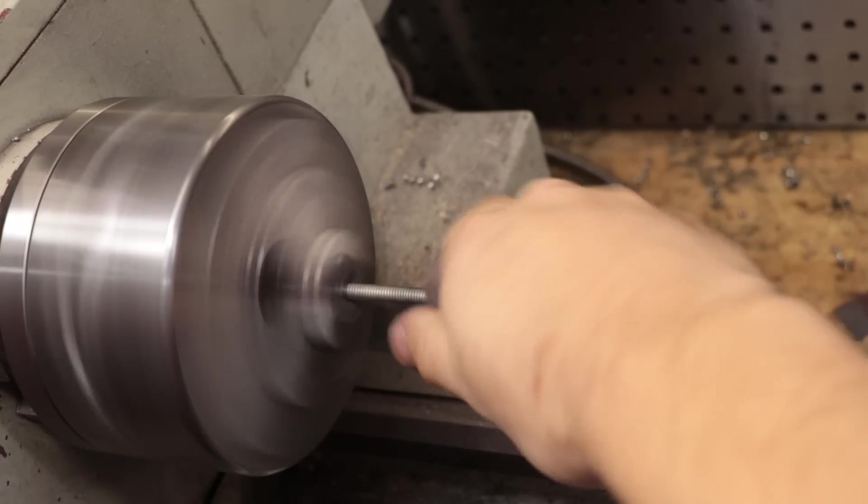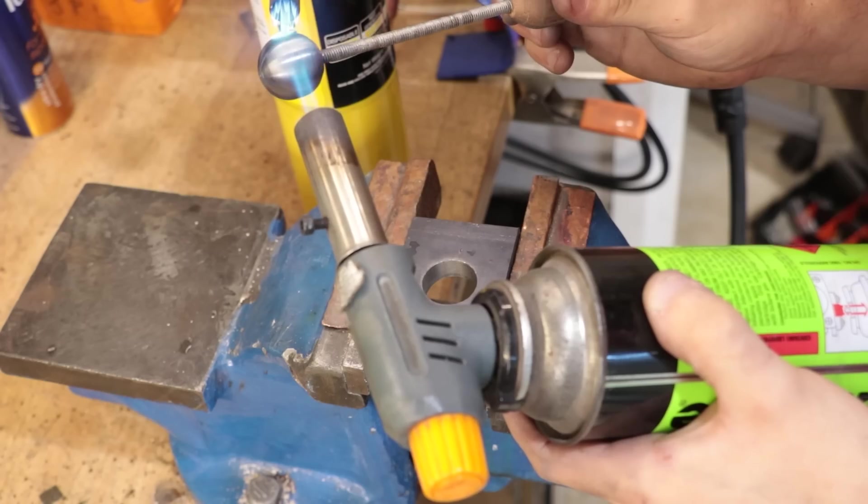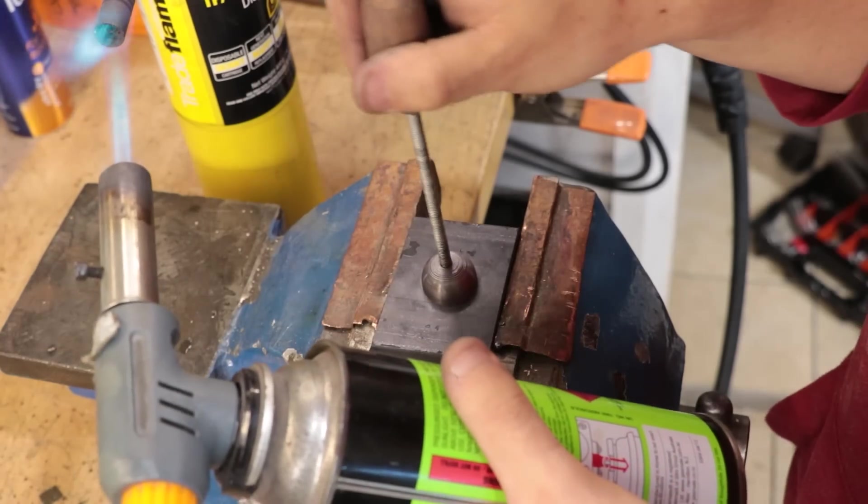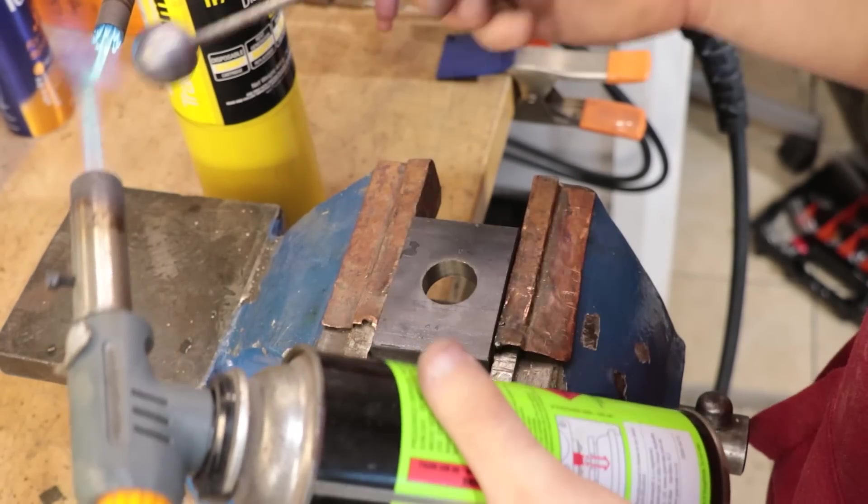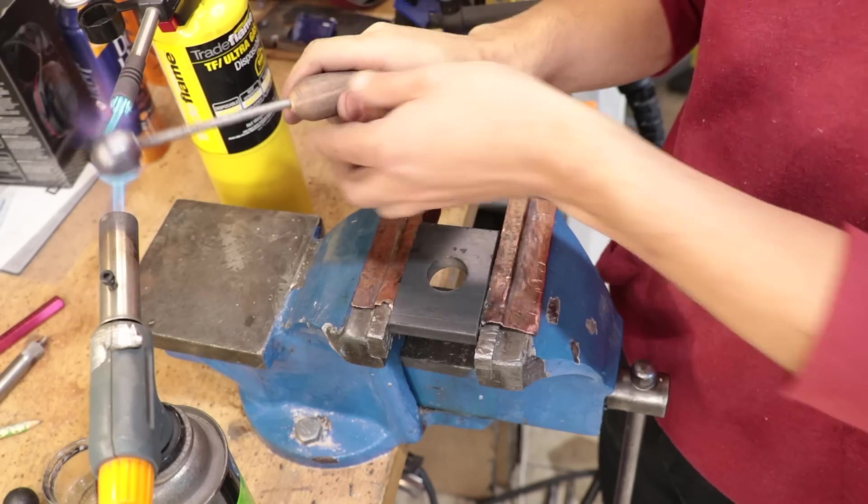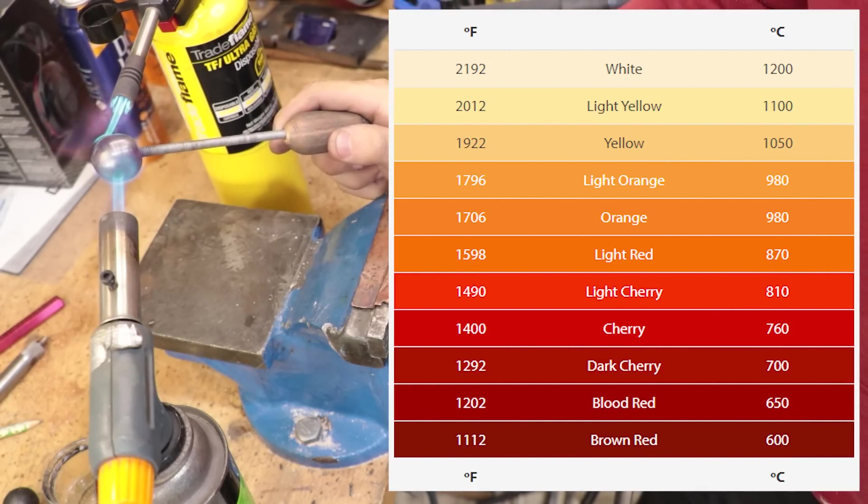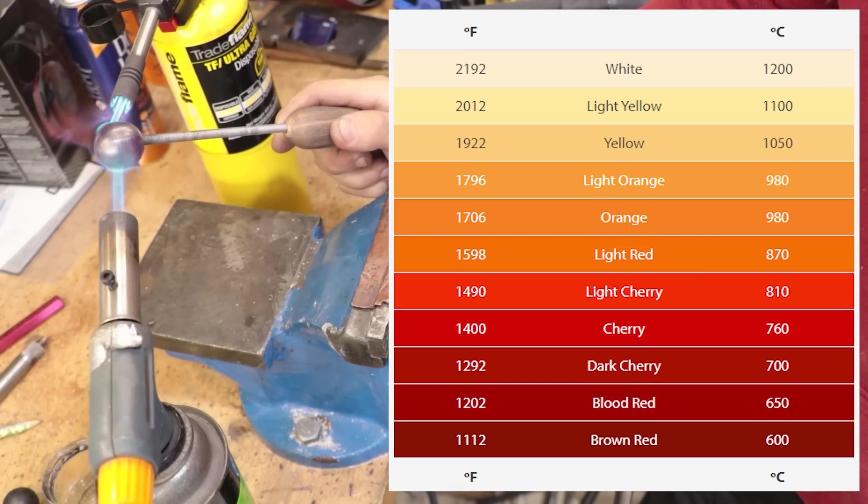The next problem was how exactly do I measure the temperature, because most thermal guns max out at about 600 degrees, at least most of the reasonably priced ones. So what I'm doing here is I'm using the glow of the steel as a rough guide. The colour of the steel will indicate its temperature and we do have a small temperature window to get this correct, about 100 degrees.